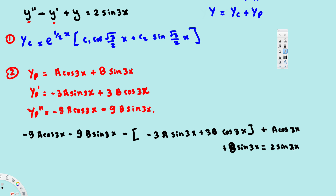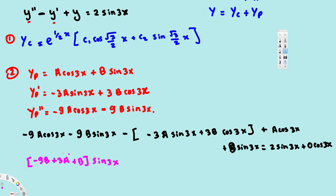We equate the coefficients of like terms. Since the right-hand side has no cos 3x, we write 0 cos 3x there. Now combining the sine terms: we have −9B sin 3x, then minus (−3A sin 3x) which becomes +3A, plus B sin 3x, giving the coefficient (3A − 9B + B) = (3A − 8B) for sin 3x.